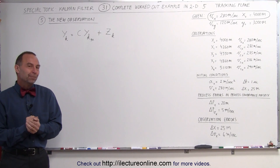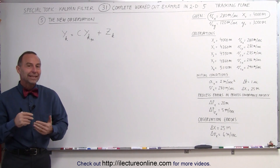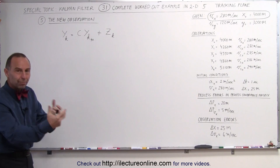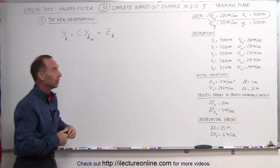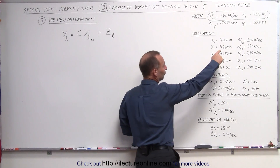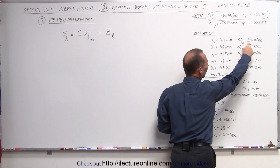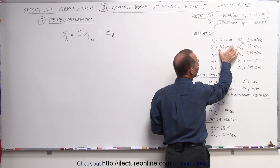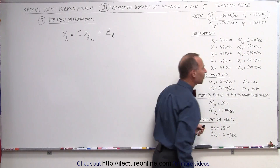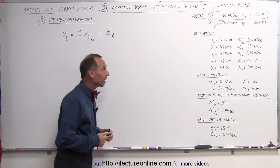Welcome to ElectronLine. Now that we've calculated the Kalman gain matrix, we're ready to import the new observation. Notice the initial position was 4,000 meters and it had an initial velocity of 280 meters per second. The new position measured is 4,260 and the new velocity is measured as 282 meters per second.